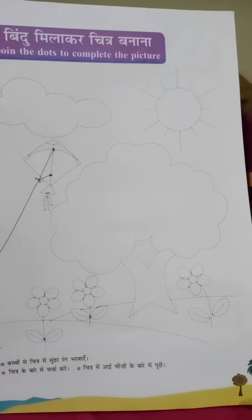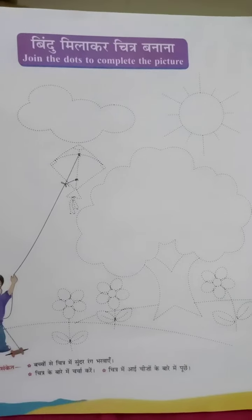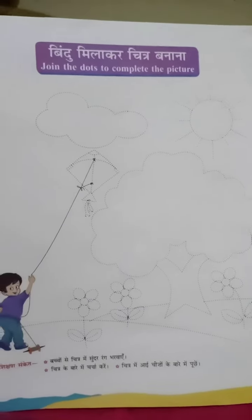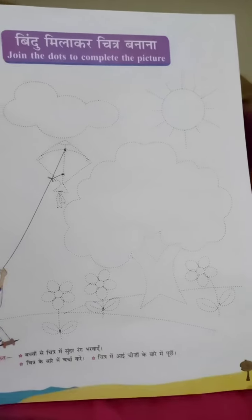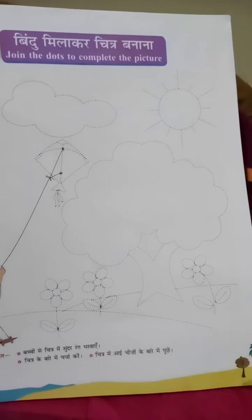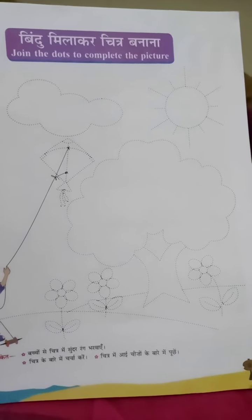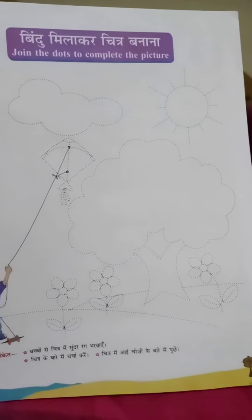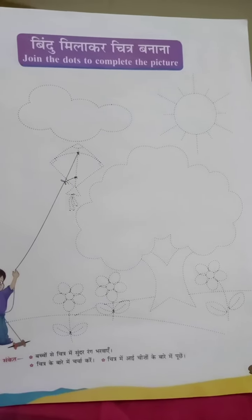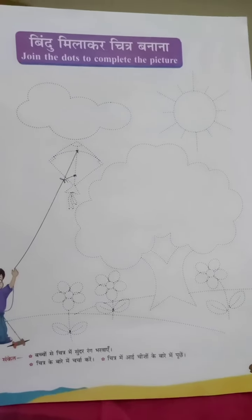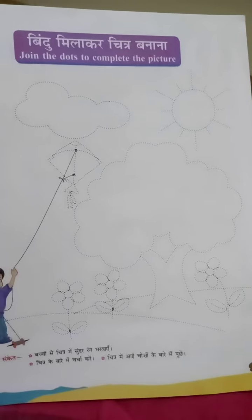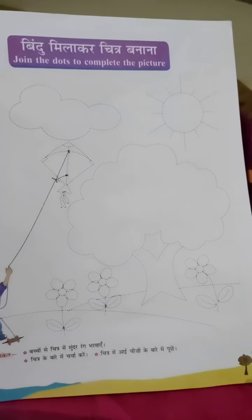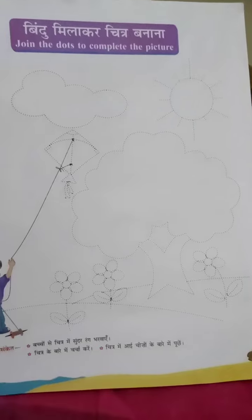Let's start from the first picture. Page number 9 — Bindu milakar chitre banayye. You can see one child is flying a kite. You can see the scenery — the tree, sun, clouds, and flowers. First, trace those points, join the dots, put the color inside, and make this picture beautiful.